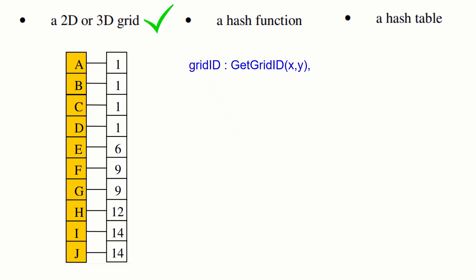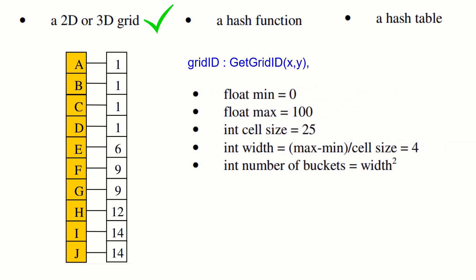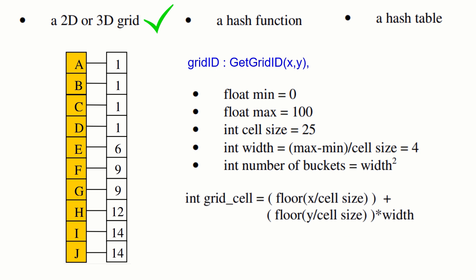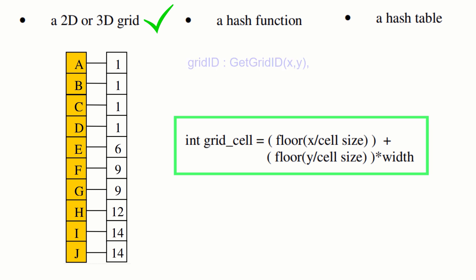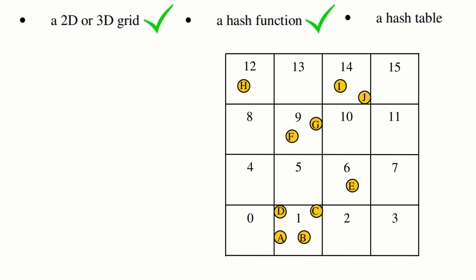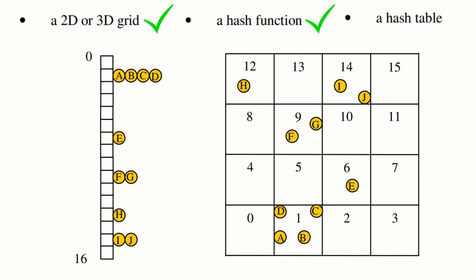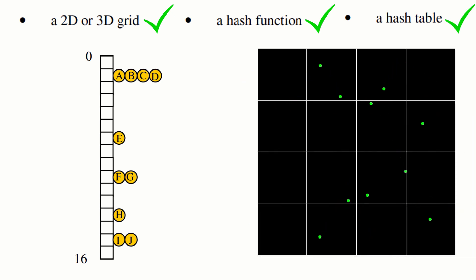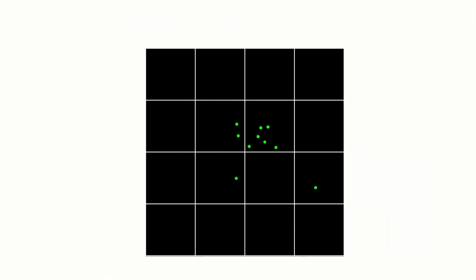For the example given we know some things about the grid: it's 100 pixels across, each cell is a 25 by 25 pixel square, the grid is 4 cells wide, and there are 16 cells or buckets in total. To work out which cell a boid is in you just use the formula shown — and if we need to give that formula a name, we'd call it the hash function. So now every time a boid updates its location it will also update its grid reference. The final step is the hash table itself, which maintains a record of which objects are in which grid cells. At the end of each frame I simply blank this table and ask each boid for its grid reference and update the table.